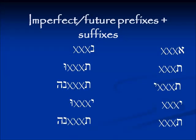For 'she will do something,' it is exactly the same as 'you masculine singular will do something.' I don't really know why that is — it might be one of my first questions when I get there. Just kidding. But they are exactly the same. The prefix for 'we will do something' is Nun.